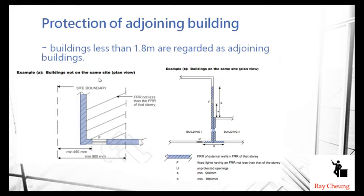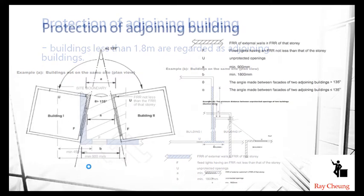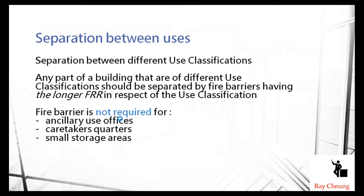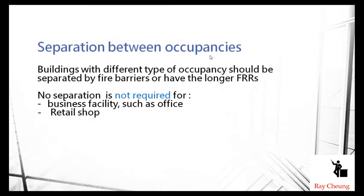If the building is not adjacent to another building but near a site boundary, the 900 millimeter requirement applies. Sometimes you also need to provide separation between areas of different use — for example, different classes of use require fire separation, although small storage areas may be exempt. Different occupancies may also need fire protection, though retail shops with good management and offices may not require this separation.